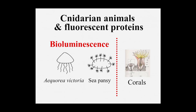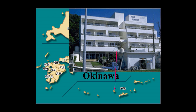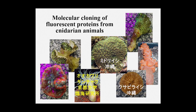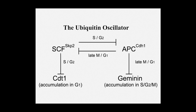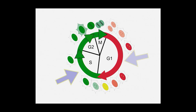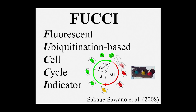Not only jellyfish, but some cnidarian animals and marine animals can produce quite similar fluorescent proteins, and we have cloned many new fluorescent proteins from those animals. By using these green and red proteins, we developed a cell cycle probe. We used the ubiquitin oscillator — cell cycle-dependent proteolysis — to create the cell cycle probe, which labels individual nuclei in G/S/G2/M-phase red and those in S/G2/M-phase green. That's FUCCI.